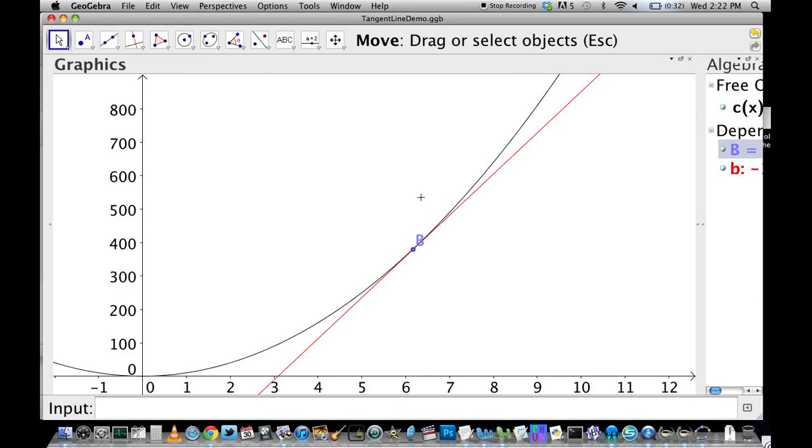Also one good guideline is that your tangent line shouldn't actually cross the line. There are exceptions to this. It's not a rule, but especially if you're looking like nearby the point, you shouldn't get a line that actually crosses the black line.